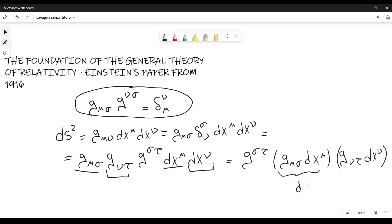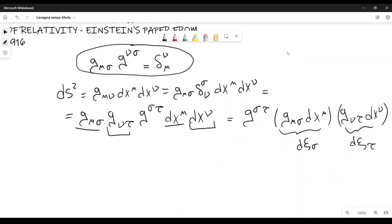And I can define this as d xi sigma, whereas similarly, this will be d sigma tau. And therefore, we find ds squared equal to g sigma tau d xi sigma d xi tau.